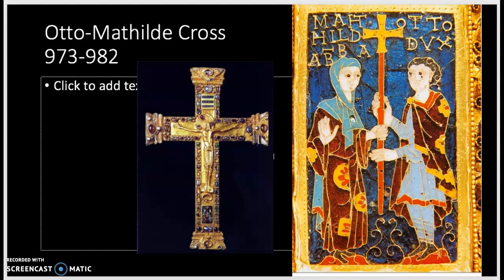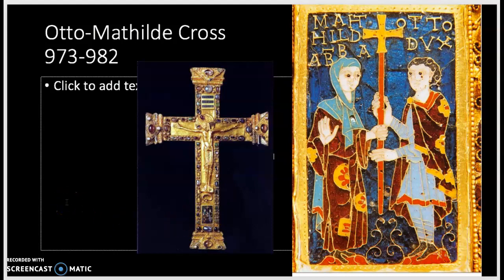Here we have another example of large-scale Ottonian sculpture. This is the Otto-Matilda cross, which shows us the crucified Christ in the center. Below him is a serpent — of course, this is the serpent of Eden. We also have elements of enamel plaques. The detail you see here on the right is actually down below the serpent on the cross. In this detail you can really see the sophisticated enamel work. Enamel is the glazing of the surface of metal, as opposed to ceramics the way we typically think of glazing.